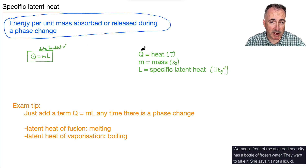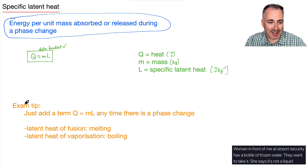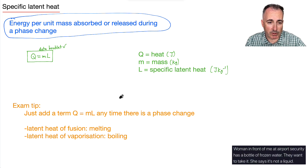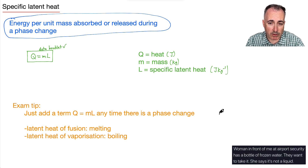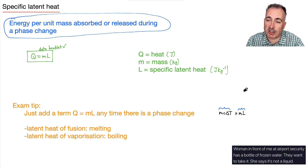And that's really the main piece you need here. An exam tip: add a term Q equals ML any time there's a phase change. So what I mean by that is, before when I was showing you how to set up Q lost equals Q gained — if you've got a side where you're changing, say, raising the temperature, you'll have Q equals MCΔt, and then you just add to it Q equals ML. The first one is for a temperature change, and this one is for a phase change.